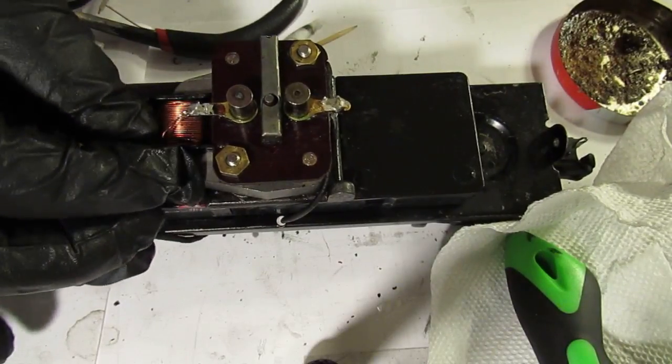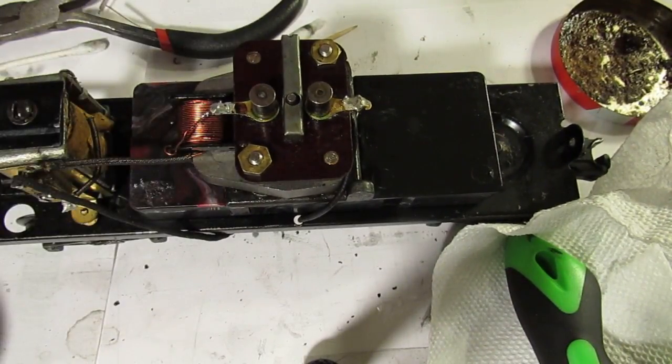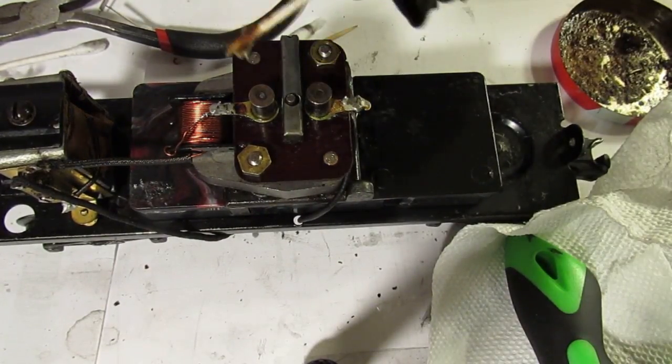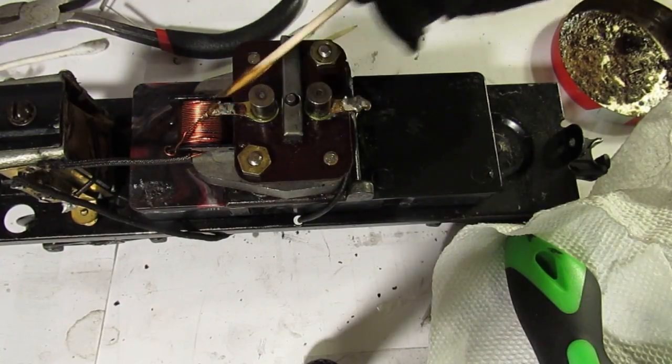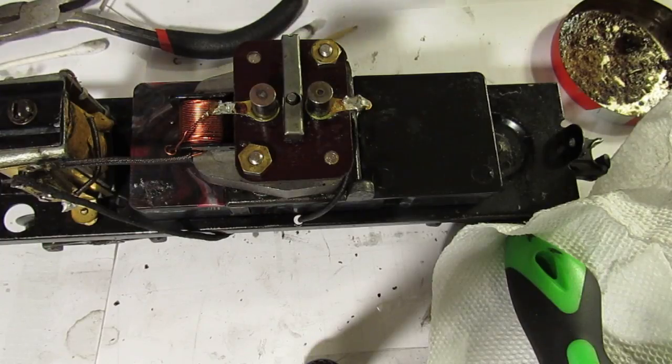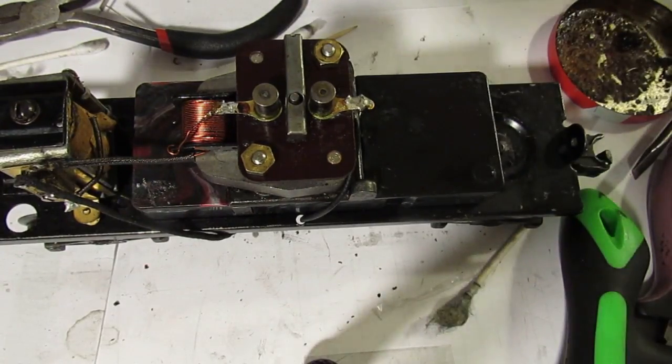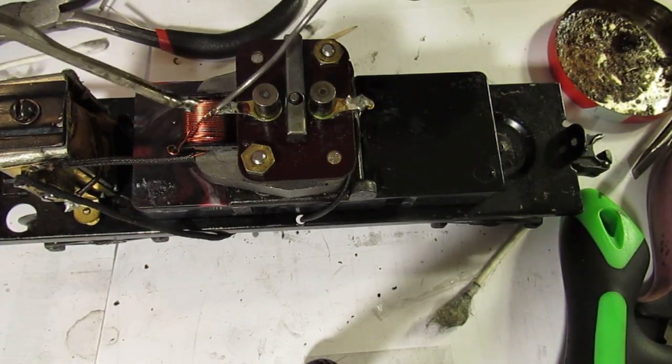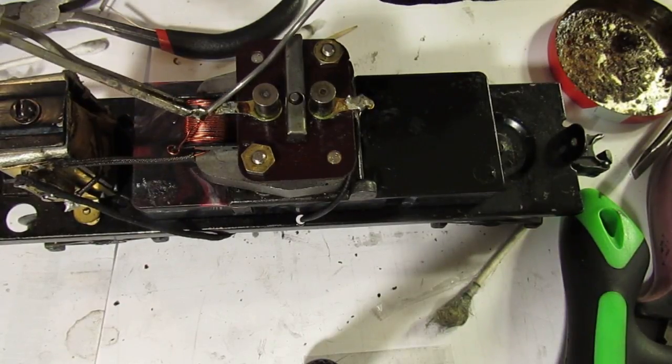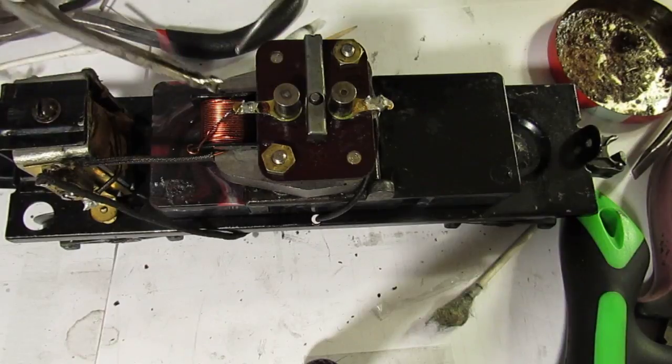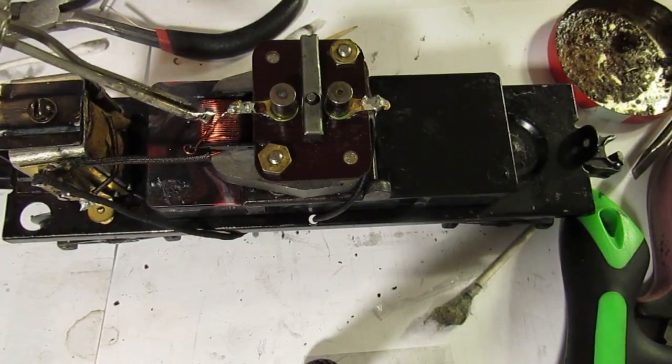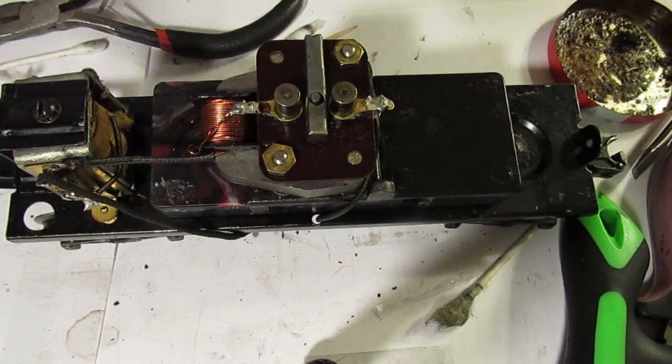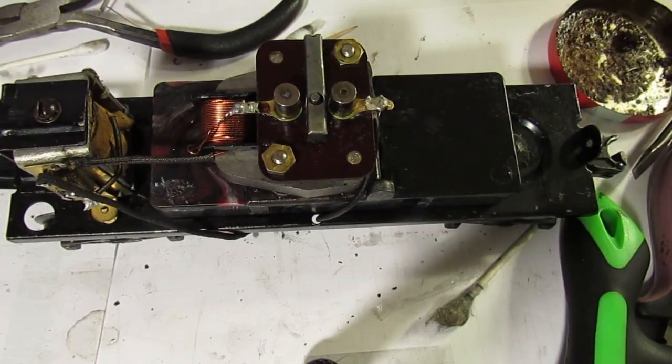We'll take our field wire that we took off in the beginning, get our flux capacitor, where did I put that solder at. Solder your field wire back on. That looks pretty good.